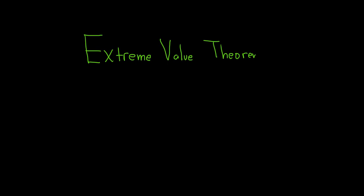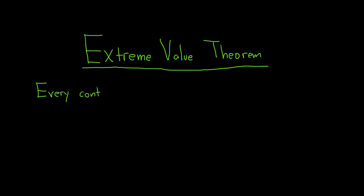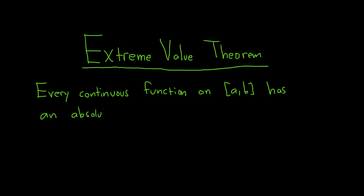The extreme value theorem basically says that every continuous function on the closed interval [a, b] has an absolute maximum and an absolute minimum. The interval has to be closed, so we have to include the endpoints.